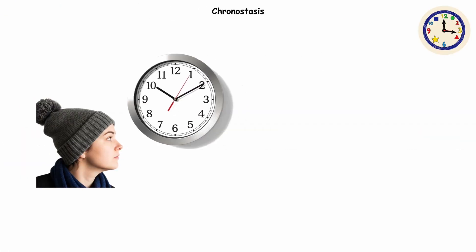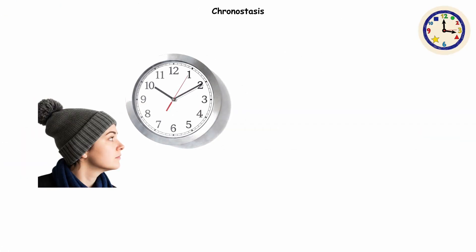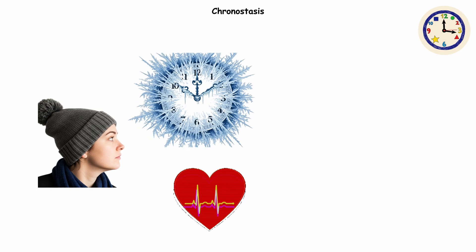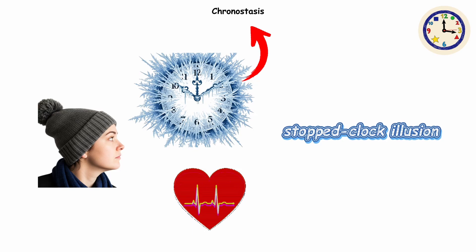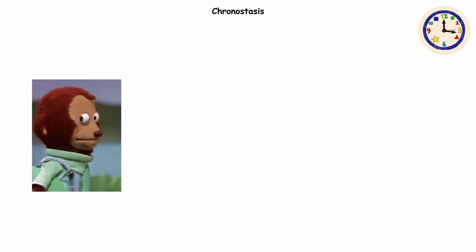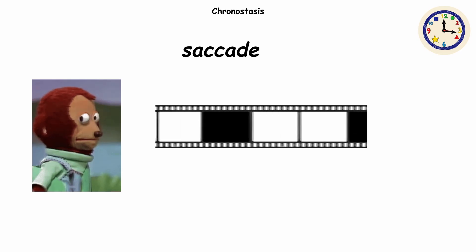Chronostasis. You glance at a clock. The second hand looks like it's frozen. For one weird heartbeat, time itself seems to stall. Welcome to chronostasis, also known as the stopped clock illusion. Every time your eyes dart from one spot to another, a rapid move called a saccade, your vision blacks out for a blink of a moment.